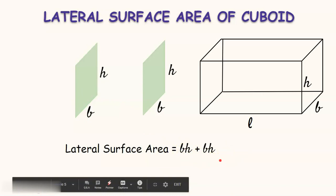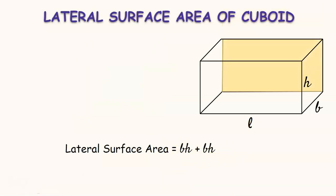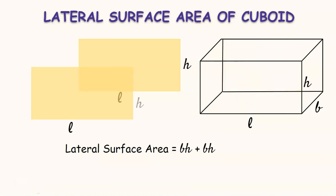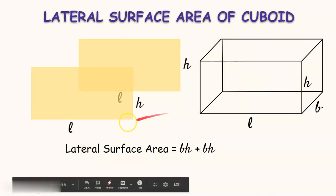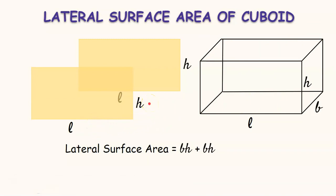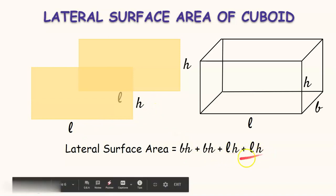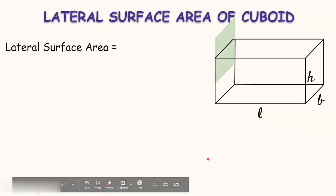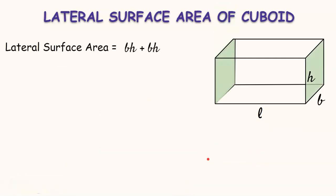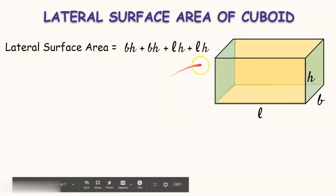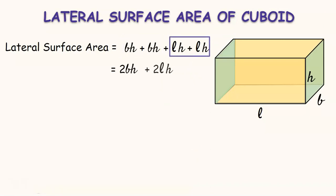Now let us consider the back face and front face with dimensions L and H for both. Therefore, the areas would be L×H and L×H each. Now, adding these two areas to the previous areas, we get the lateral surface area as BH + BH + LH + LH. That is, BH + BH can be written as 2BH, and LH + LH can be written as 2LH.